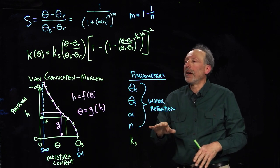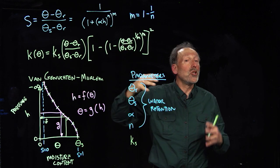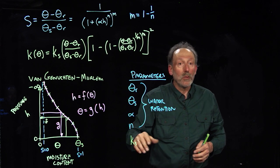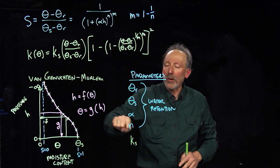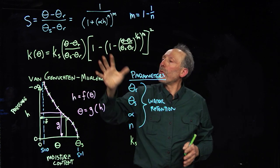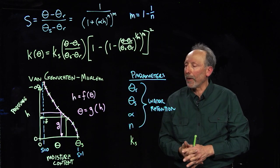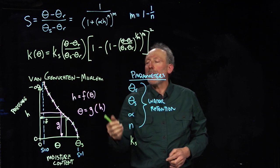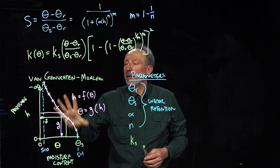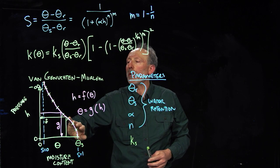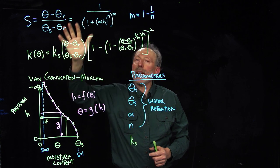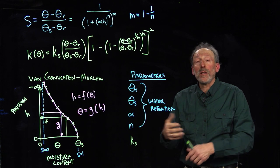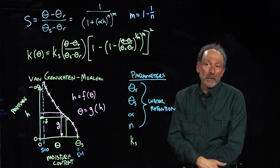And so, this is the power of having a soil water retention function that's joined with the conductivity, so that we, instead of having to measure the unsaturated conductivity, we only have to measure it saturated, and the rest of the properties about the unsaturated behavior come directly out of the characteristic curve of the soil. So, this is why you'll see the Van Genuchten-Mualem model used very commonly, because it fits the data very well. It has a very flexible shape to it, so it can go through the data well.